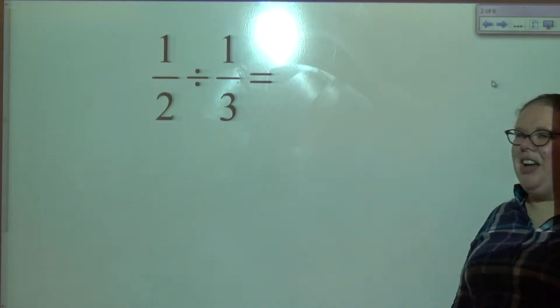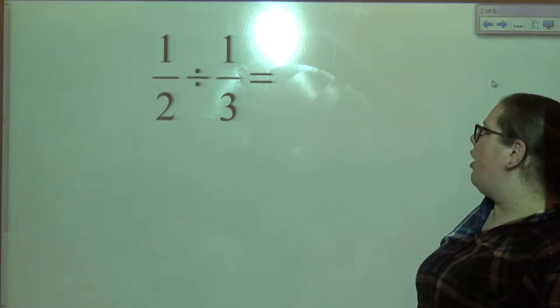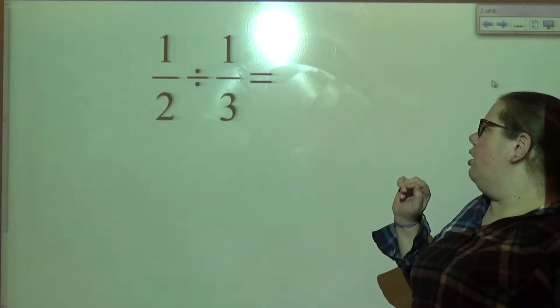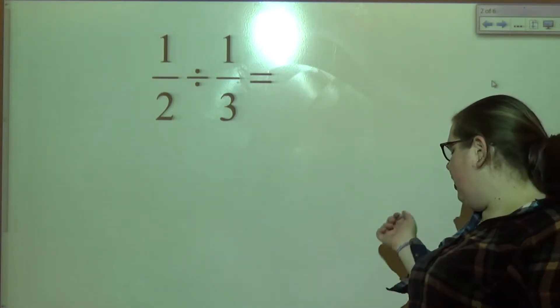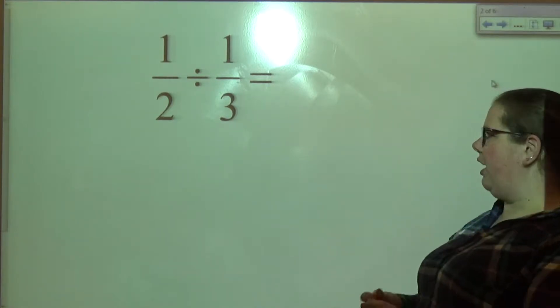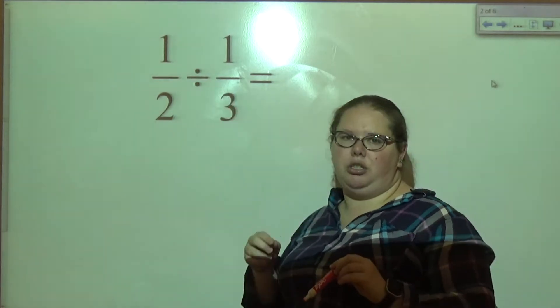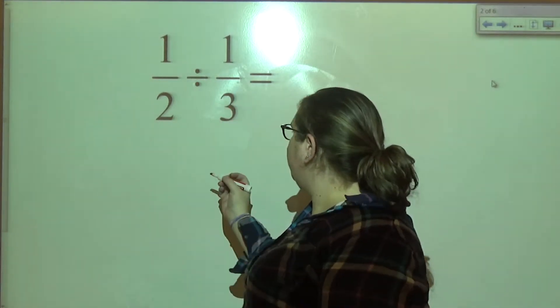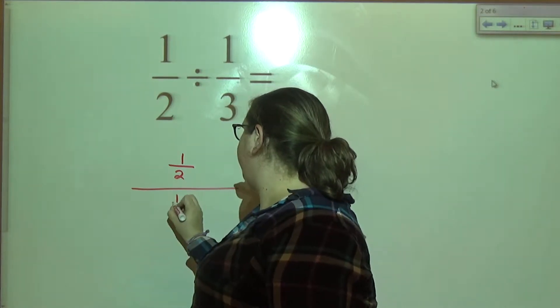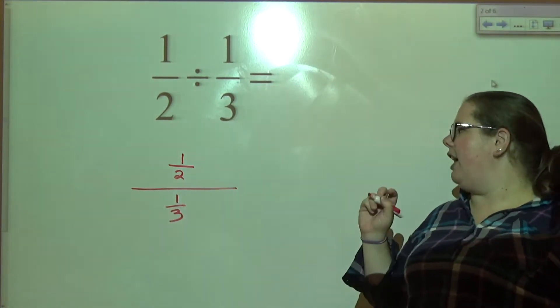Alright, so I don't have any circles for this one, we're just going to go down and dirty with this. So one half divided by one third. Think of it this way, because students never know why they divide this way. What's another way of writing division? Another way of writing it is one half divided by one third.